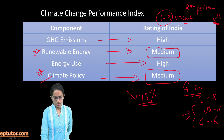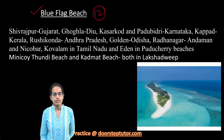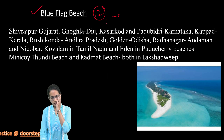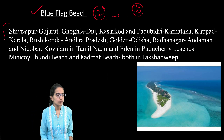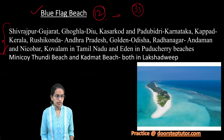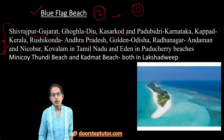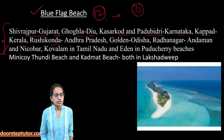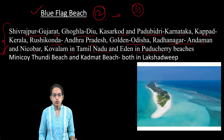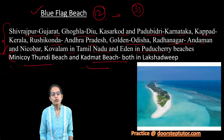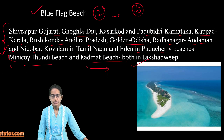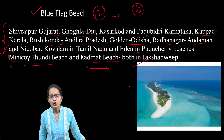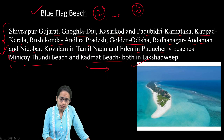The next is Blue Flag Beaches — 12 such beaches have been identified. This certification is given by the Foundation for Environmental Education in Denmark on 33 parameters. The certified beaches include Shivrajpur in Gujarat, Ghoghla in Diu, Kasarkod and Padubidri in Karnataka, Kappad in Kerala, Rushikonda in Andhra Pradesh, Golden Beach in Odisha, Radhanagar in Andaman and Nicobar, Kovalam in Tamil Nadu, and Eden in Puducherry. Two new beaches added are Minikoy Thundi and Kadmat Beach — both known for white sand and turquoise waters.